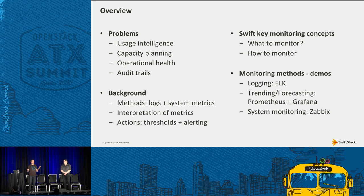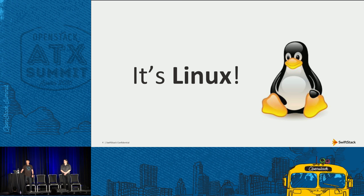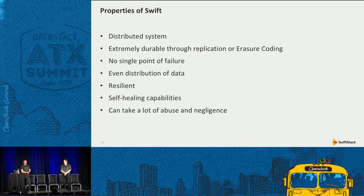The monitoring methods we're using are: logging with ELK, trending and forecasting with Prometheus, and systems monitoring with Zabbix. These overlap a bit — pick whatever you like better. After all, this is just Linux. What would you do if you had an Apache web server to monitor? You'd monitor the Linux machine with some additional log metrics. It's really not all that different.